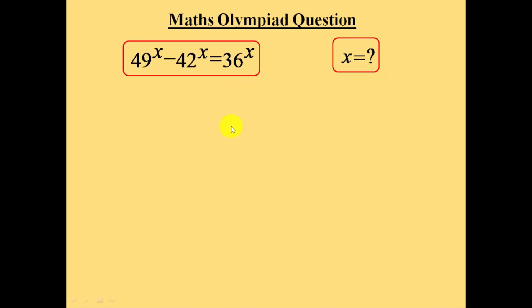Hello everyone. In this session, we are going to calculate the value of x in the equation 49 power x minus 42 power x is equal to 36 power x.